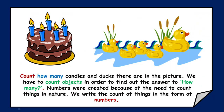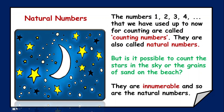Here we have a cake with some candles, and there's also a group of ducks. If I say count how many candles and ducks are there in the picture, then you need to count the objects to find the answer. Numbers are used to express the counting, and the first group of numbers is natural numbers.